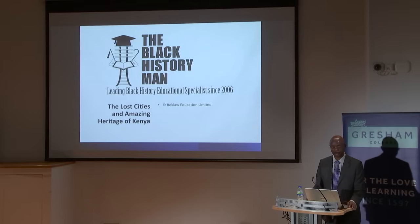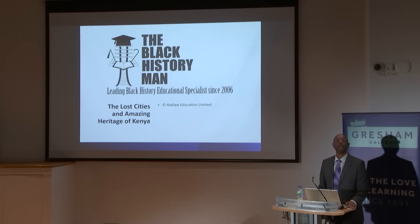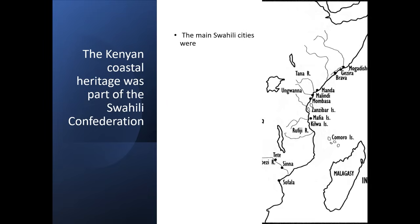The presentation is called The Lost Cities and Amazing Heritage of Kenya. Let me first put Kenya into its historical context. The Kenyan coast heritage was part of what scholars call the Swahili Confederation. The Swahili cities stretched all the way along the East African coast, from Somalia in the north down through Kenya, Tanzania, as far south as Mozambique.